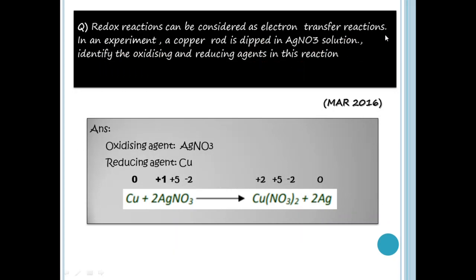Redox reactions can be considered as electron transfer reactions. So in an experiment, a copper rod is dipped in AgNO3 solution. Identify the oxidizing and reducing agent in this reaction. The reaction is: Cu + AgNO3 giving Cu(NO3)2 + 2Ag.